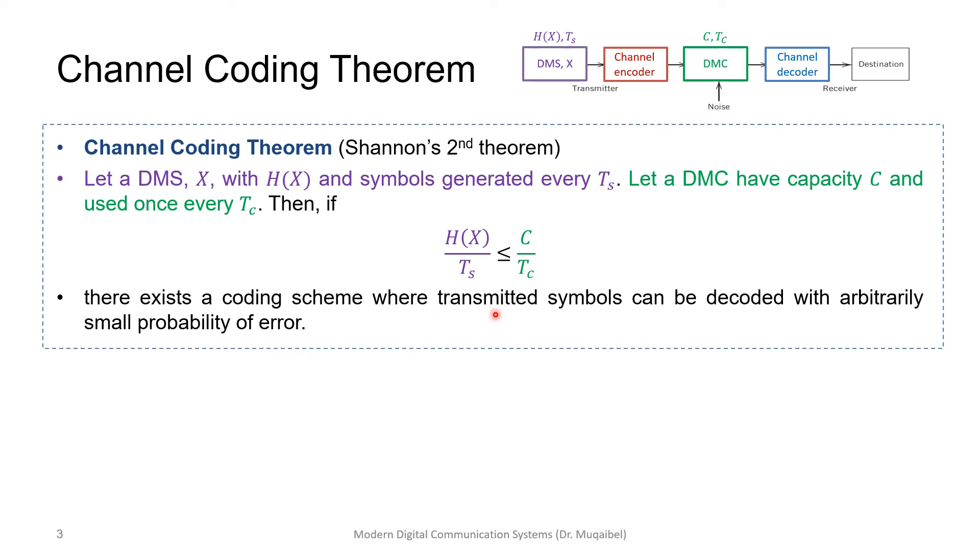So we can have a system that has a very small probability of error. We can have a code that satisfies the condition as long as we are not exceeding the channel capacity.